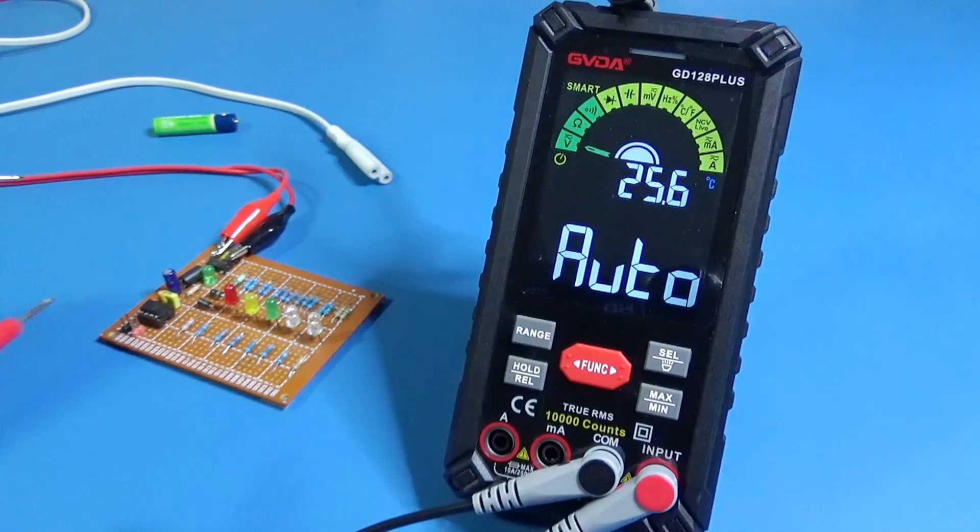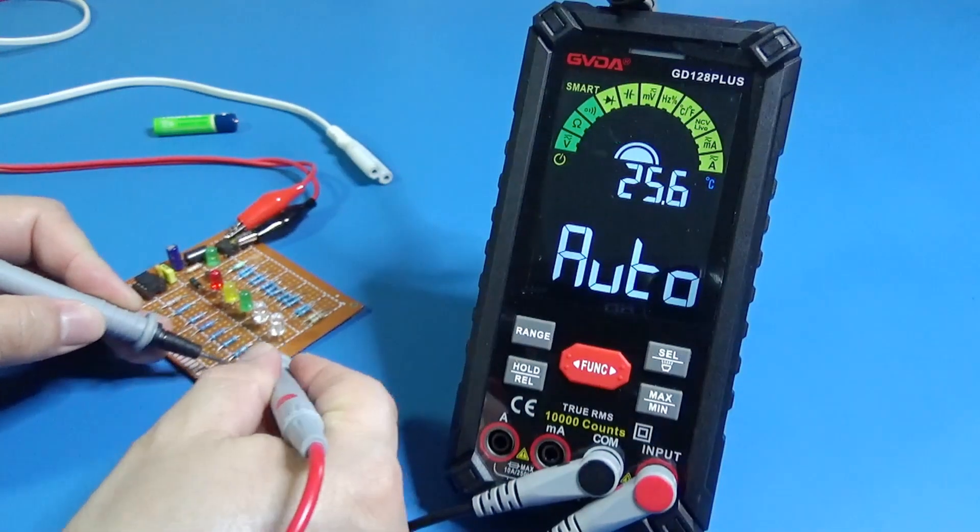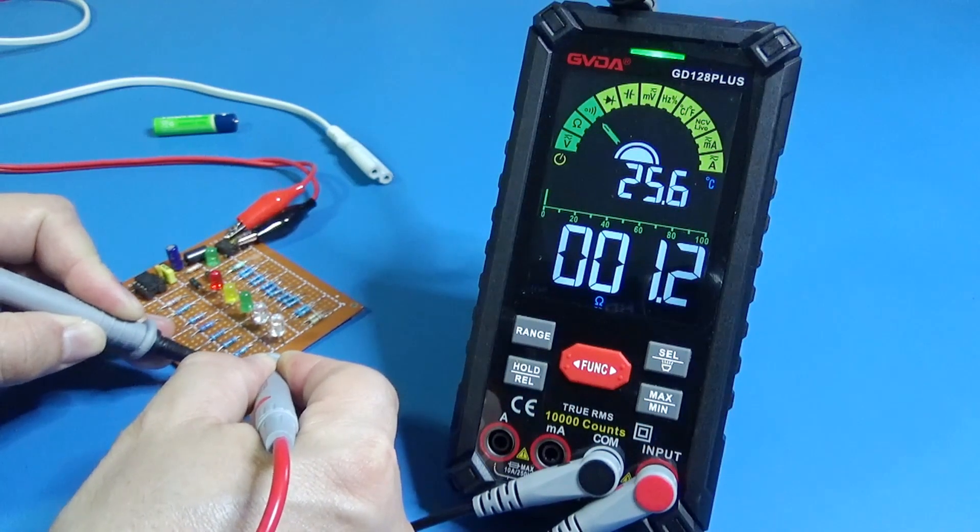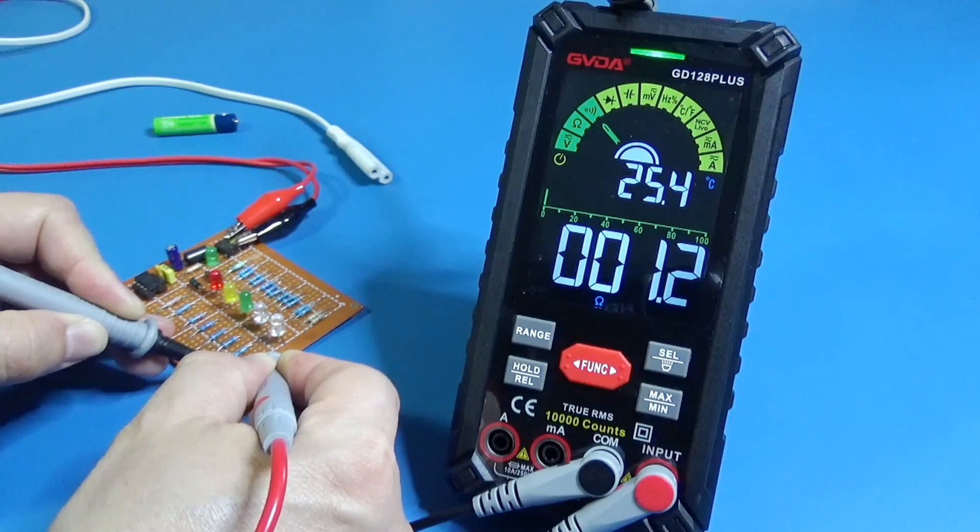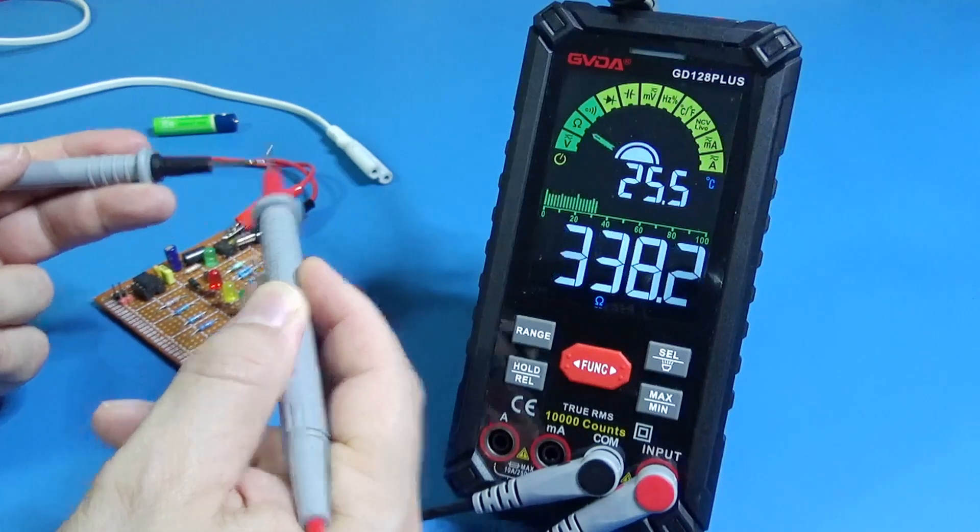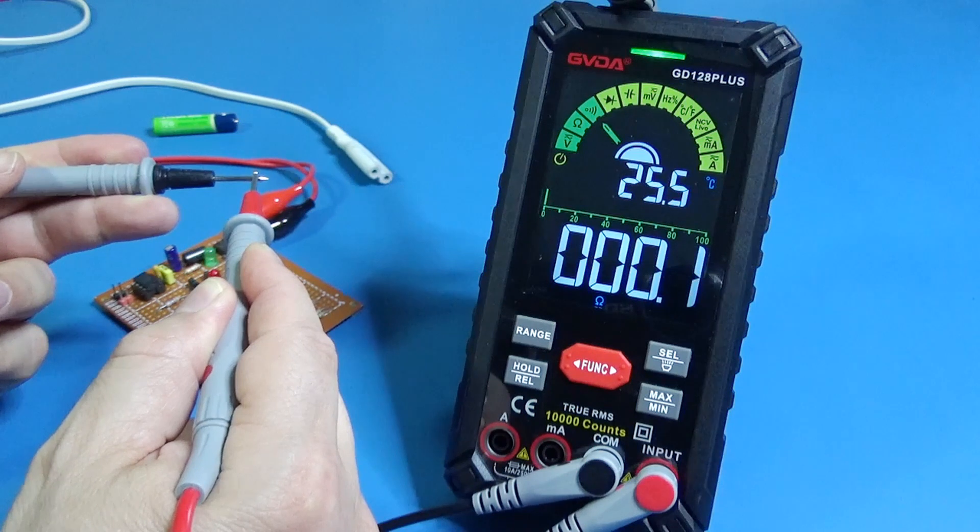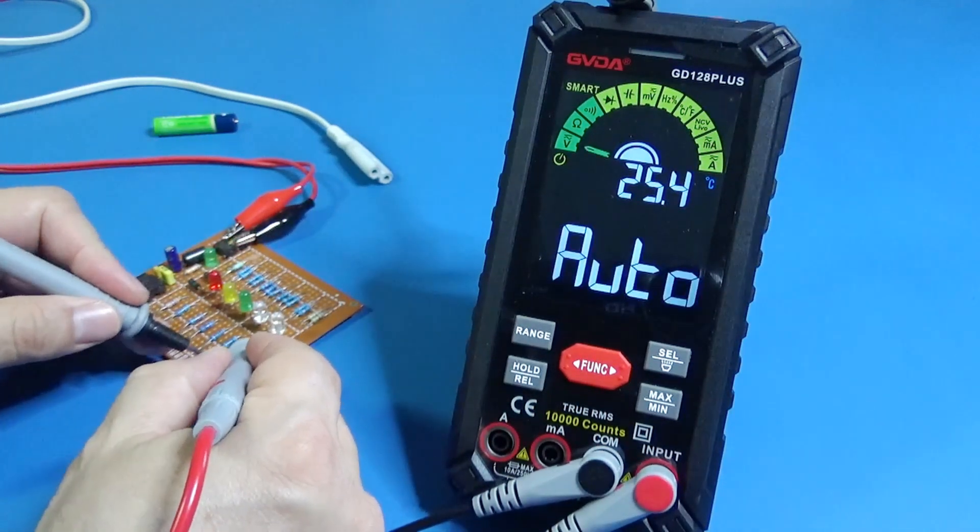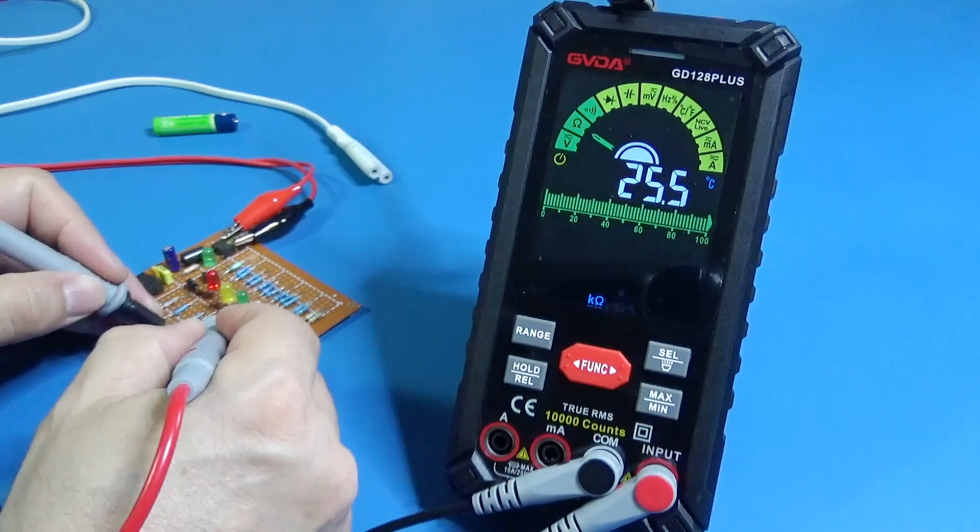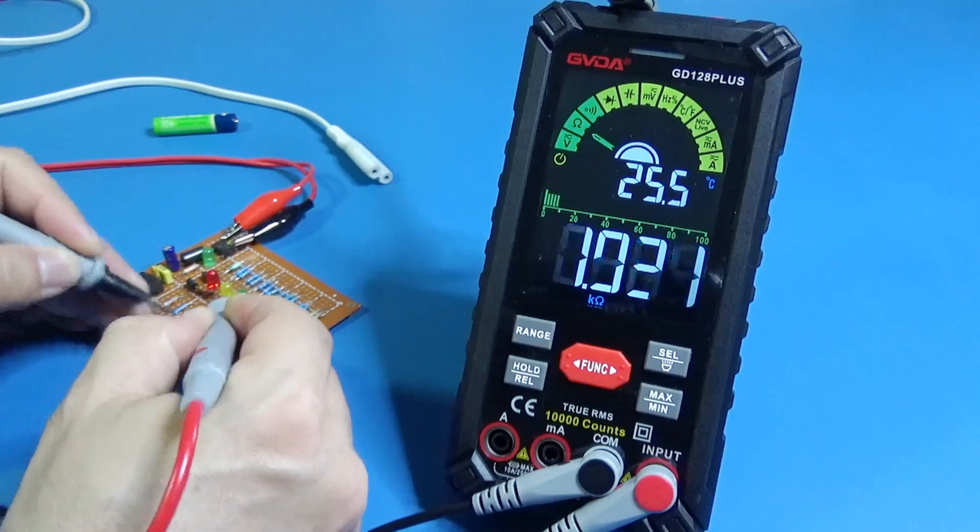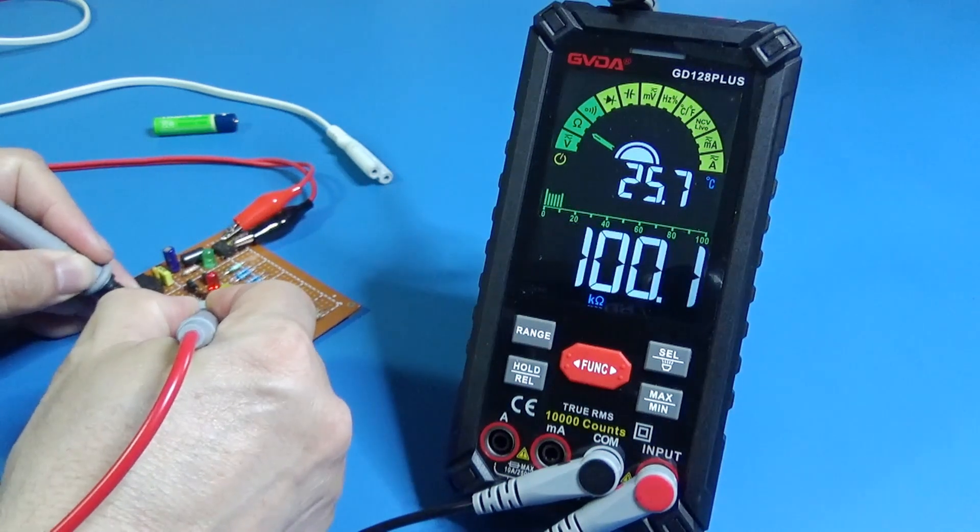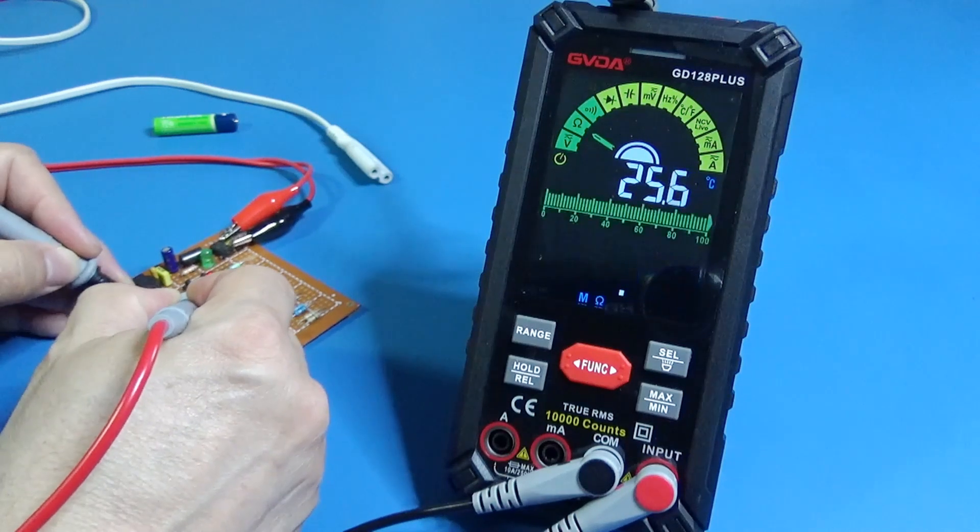Now let's try continuity. Okay, next one - resistors. 1.2 ohms because there is an internal resistance with the cables. Great, 10 ohms, 100 ohms, 1 kilohm, 10 kilohms, 100 kilohms, 1 meg, and 10 megohms.